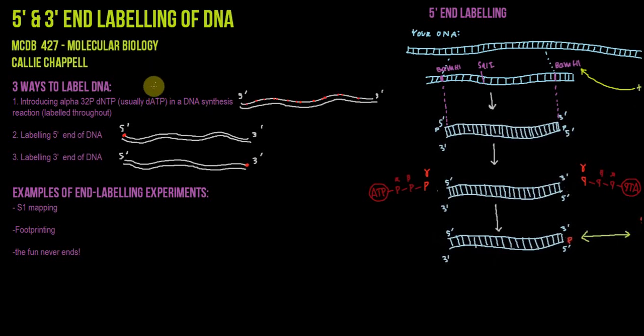So to introduce this, there are three ways to label DNA. The first is by introducing an alpha-32-phosphate DNTP, usually DATP, in a DNA synthesis reaction, and that results in labeled DNA that's labeled throughout.